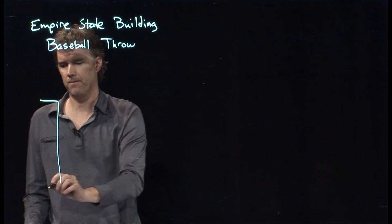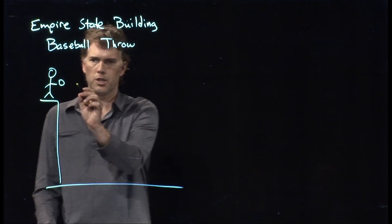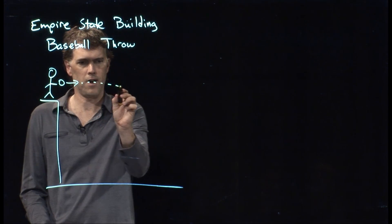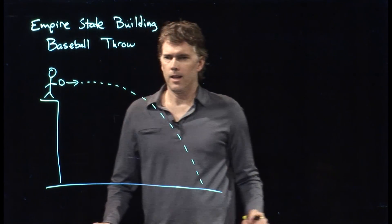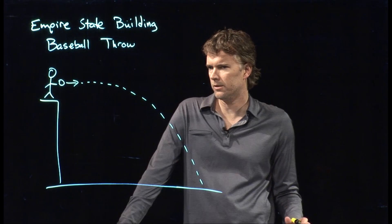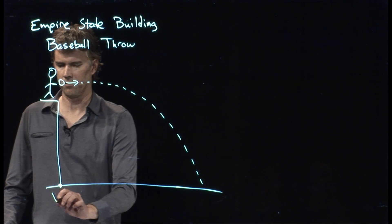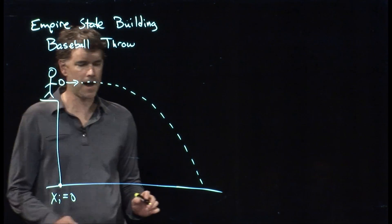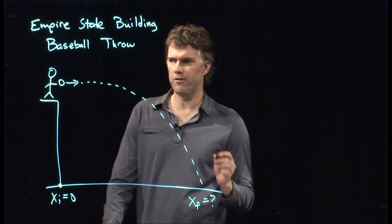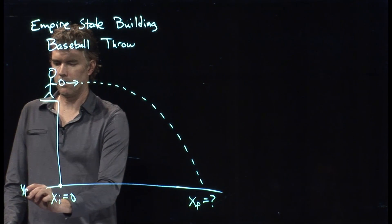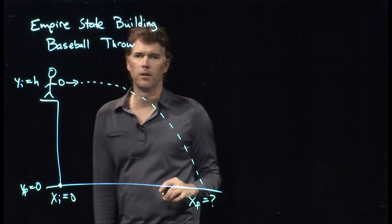So let's draw the picture here. Here we are standing on top of the Empire State Building. We've got a baseball. We are going to launch it horizontally, and it follows this parabolic trajectory, and eventually it's going to hit the ground. Let's ask the question, how far does it go? To answer that question, we first need to decide on a coordinate system. So let's make our origin right there at the bottom of the building. X initial is zero. X final is what we're looking for. Y final is the ground, so that's zero. Y initial is up there where we started, height h.